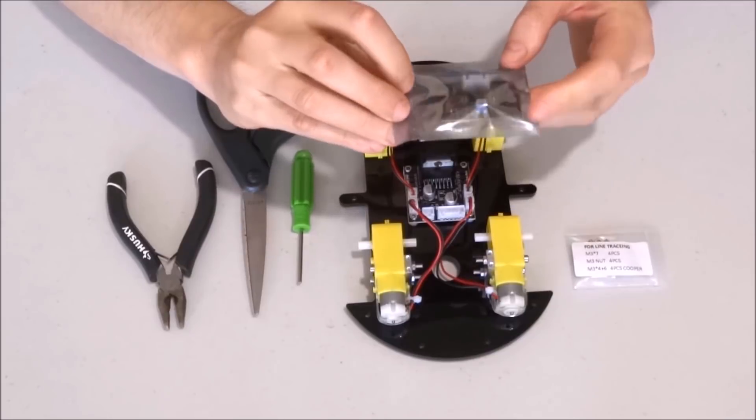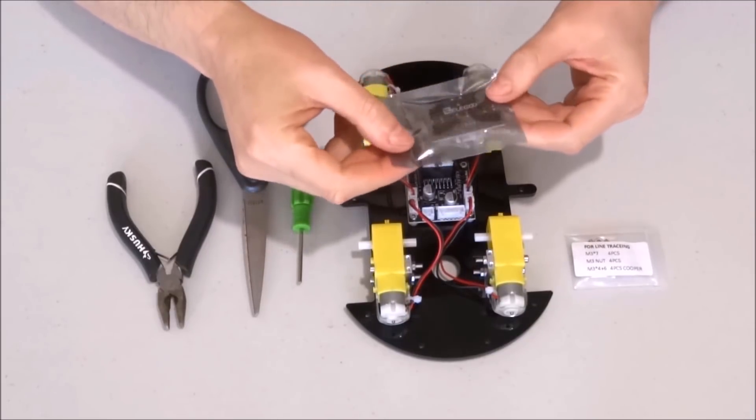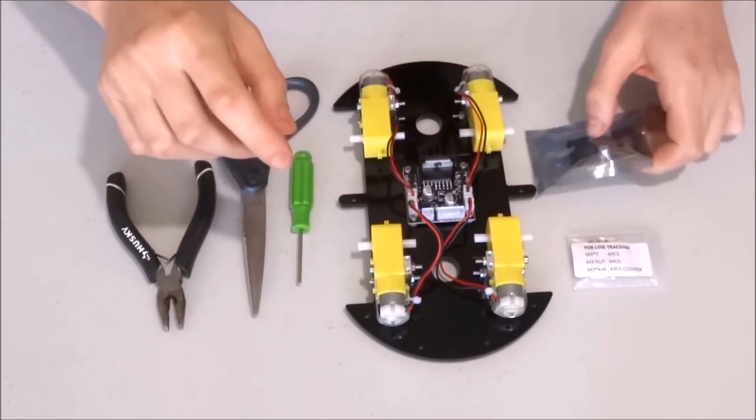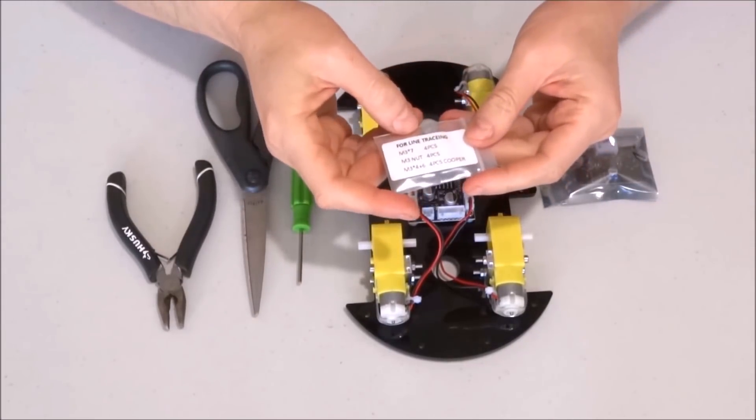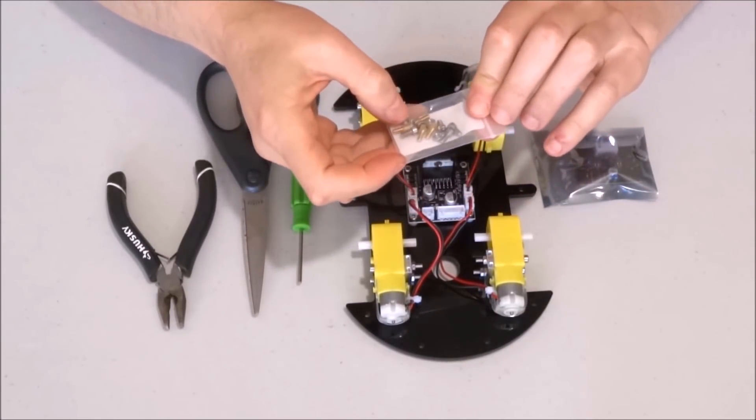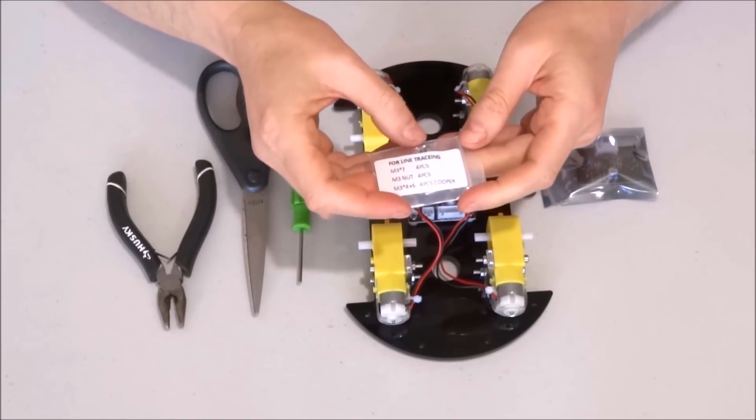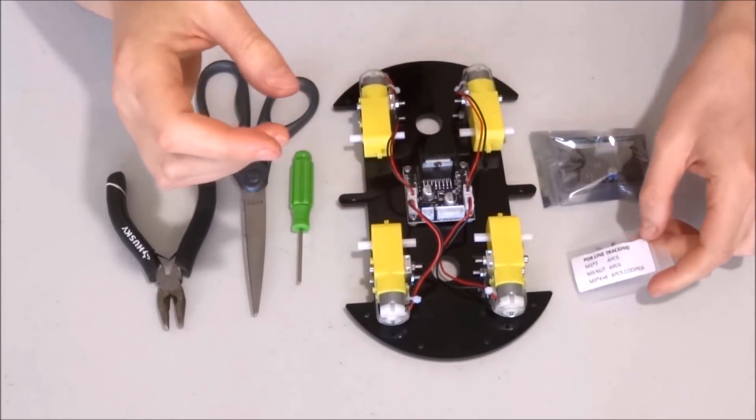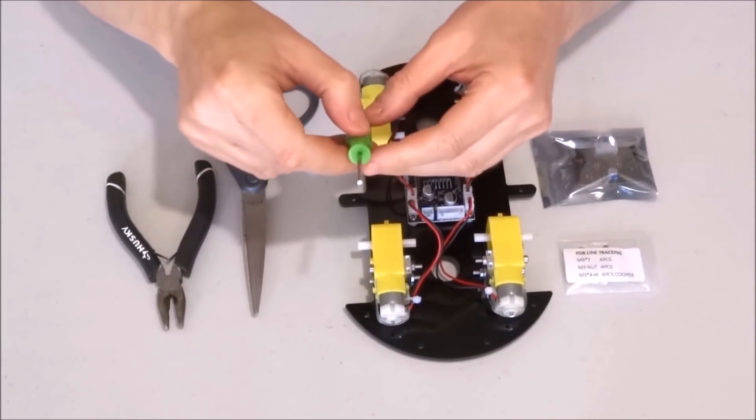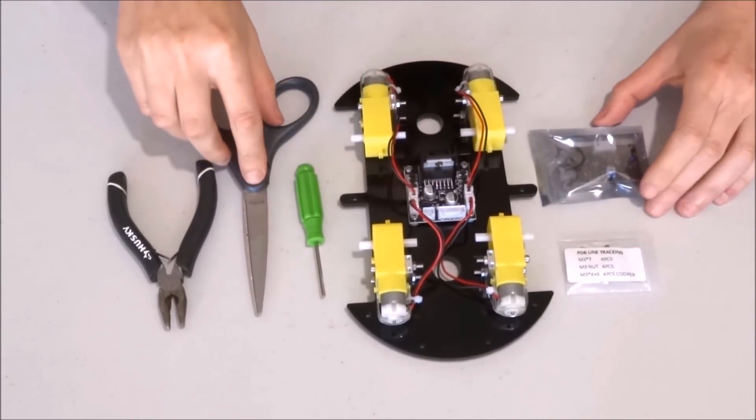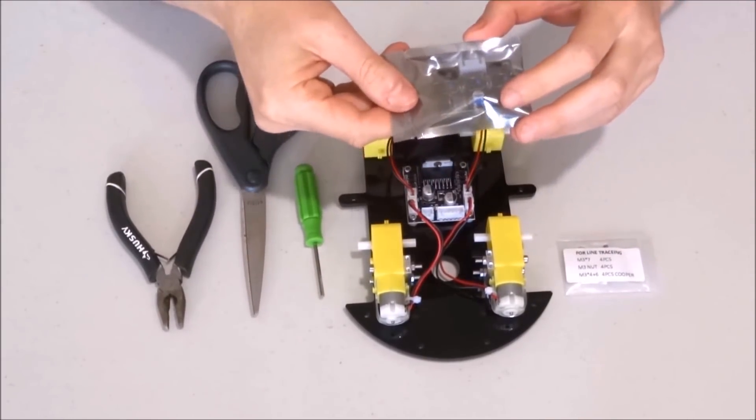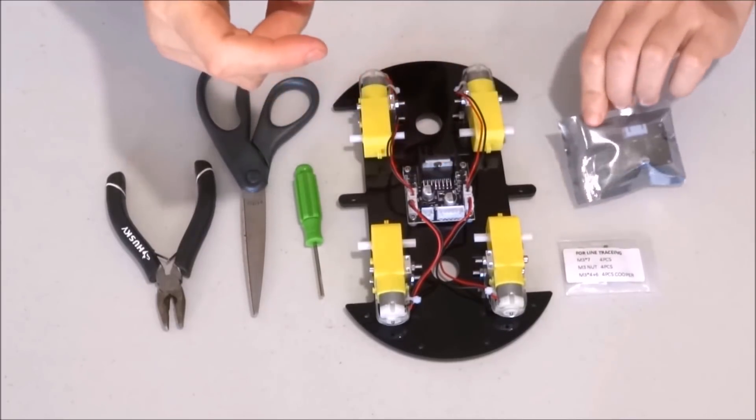For this we will need the line tracking sensor, the bag of spacers, bolts and nuts labeled for line tracking, the hexagonal tool. I will use scissors to open this bag, though you can also directly tear it.